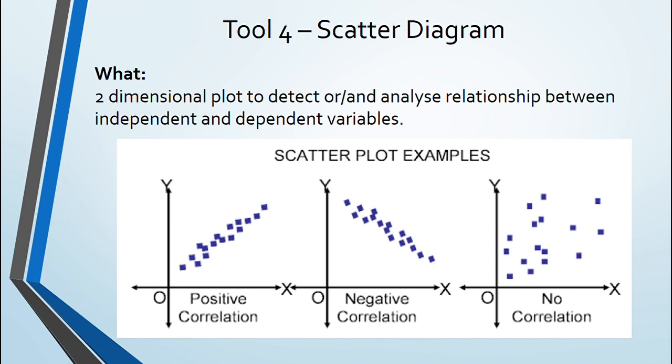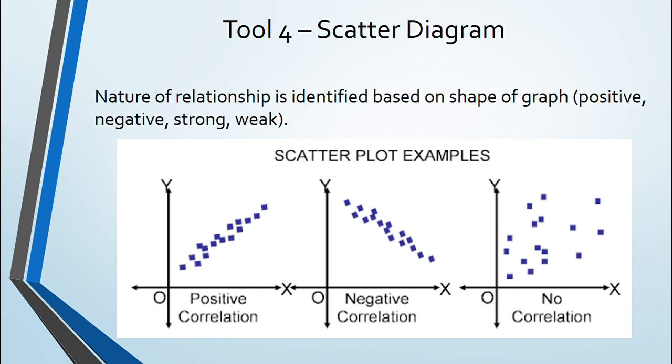This is how scatter plot looks like. Now relationship nature is identified by shape of graph. If data points are close to each other relationship is strong and if they are scattered away it is weak.